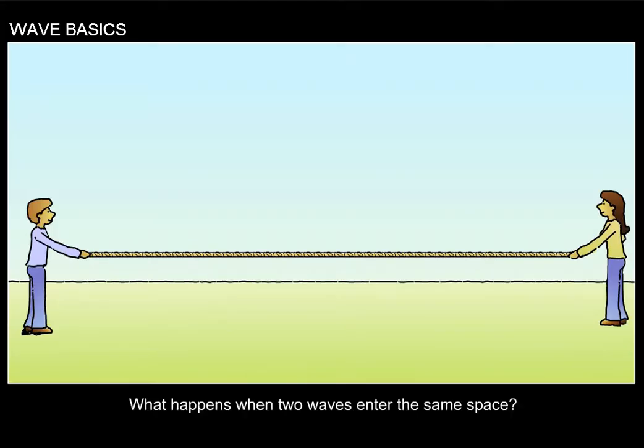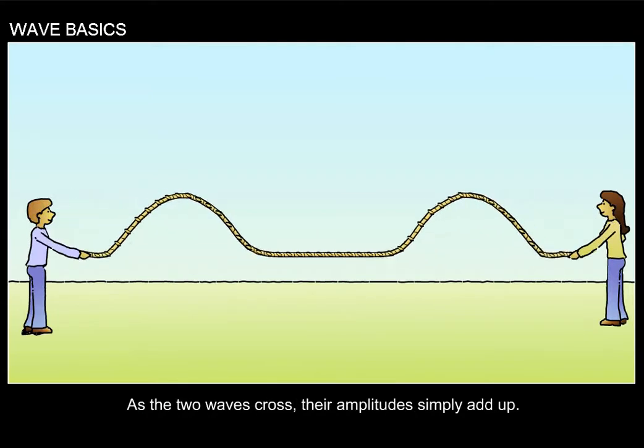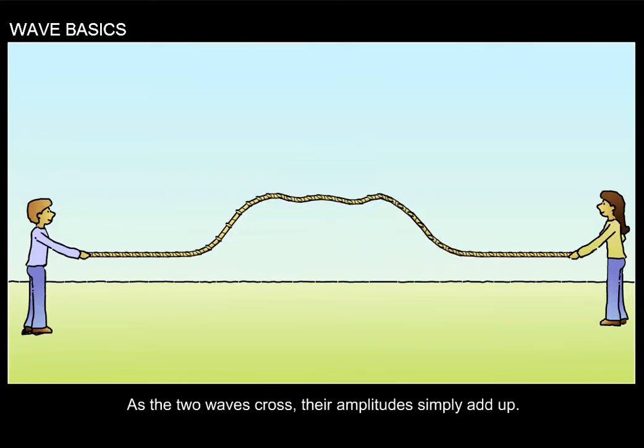What happens when two waves enter the same space? Suppose we send two pulses down a rope, one from either end. As the two waves cross, their amplitudes simply add up.